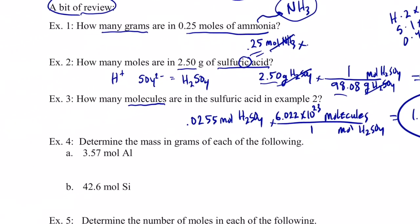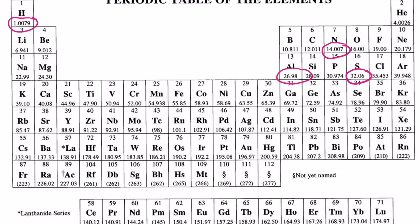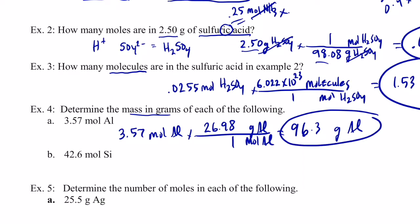Let's do a few more. Example 4a: 3.57 moles of aluminum — multiply by a conversion factor, moles of aluminum on the bottom, grams on top, one per mole. Aluminum from the periodic table is 26.98 grams per mole. So 3.57 times 26.98, to three significant figures, gives us 96.3 grams of aluminum.